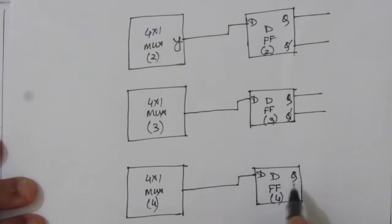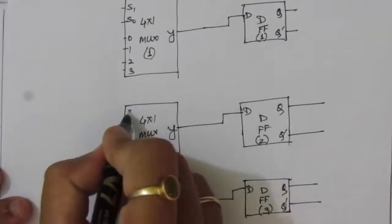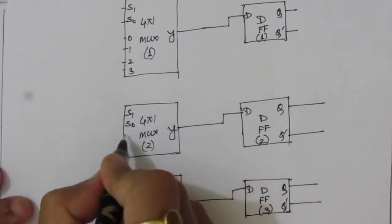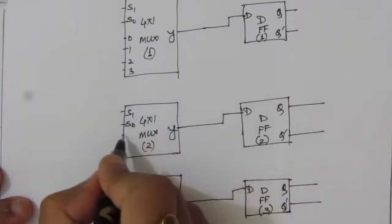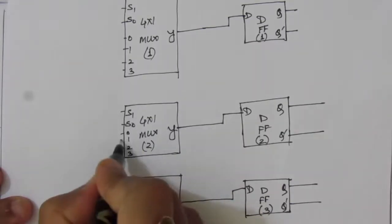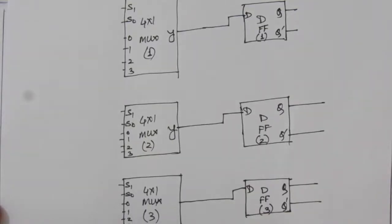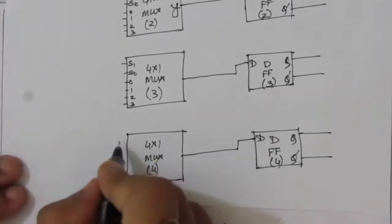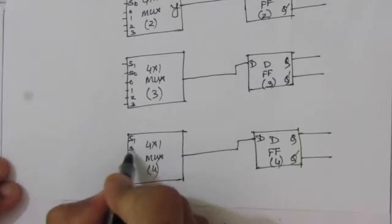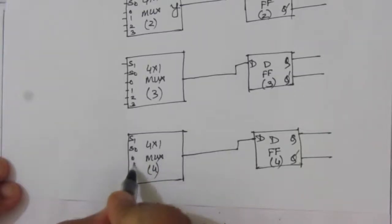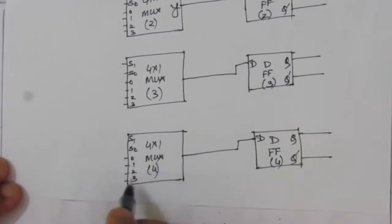Each multiplexer also has 2 select line inputs S1 and S0, and 4 input lines 0, 1, 2, 3. We have now drawn all 4 multiplexers and 4 D flip-flops. The last multiplexer similarly has 2 select lines S1 and S0 and input ports 0, 1, 2, 3.